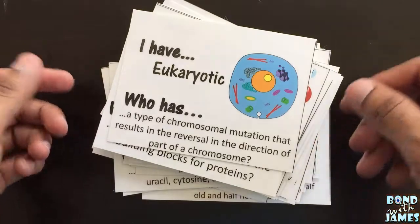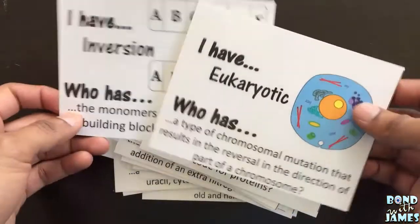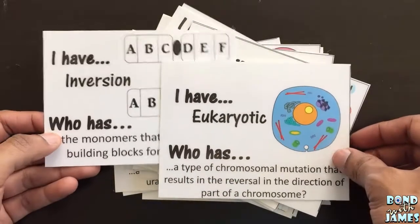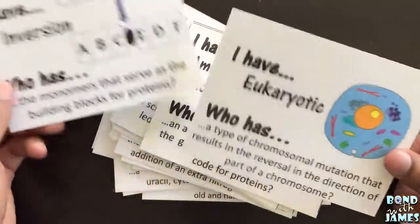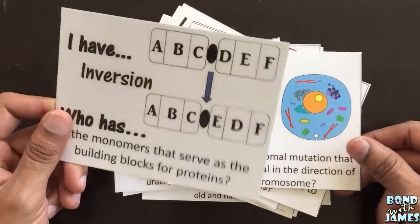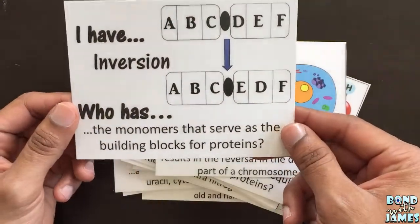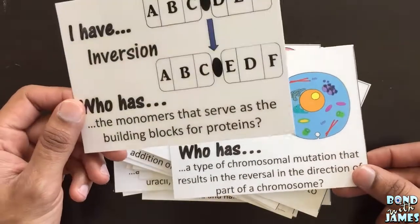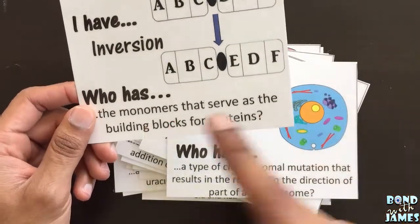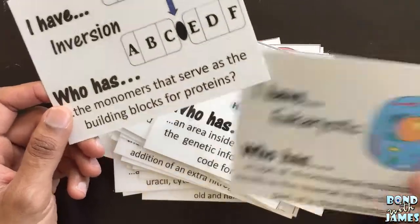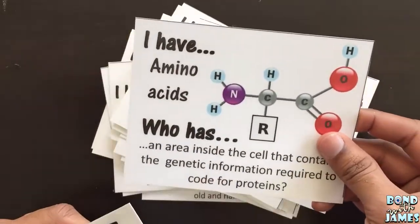The way this game works is that if I wanted to start with the second card — the second card within the product — I would read my card first: 'I have inversion, who has the monomers that serve as the building blocks for proteins?' And students would need to listen carefully to that clue, and whoever had the card or the answer for that clue would then read their answer.